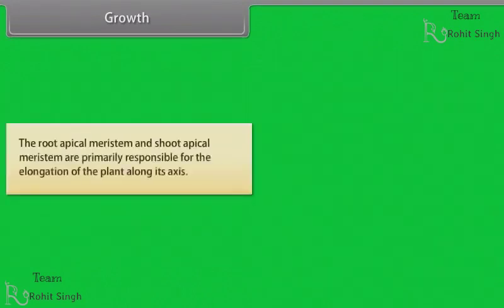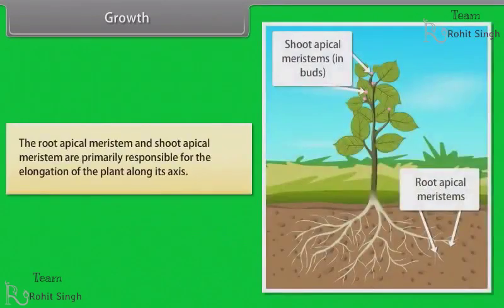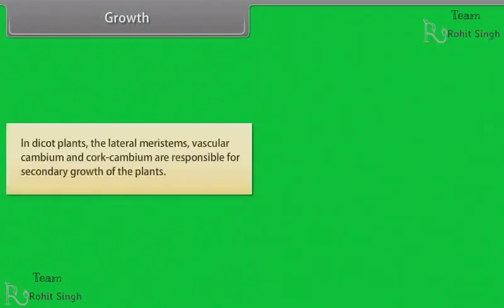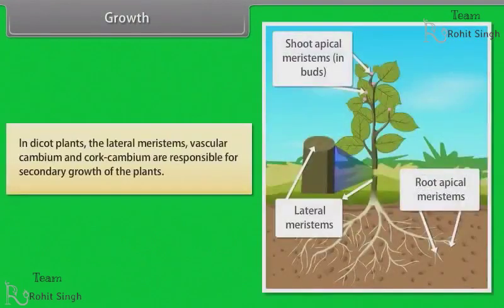The root apical meristem and shoot apical meristem are primarily responsible for the elongation of the plant along its axis. In dicot plants, the lateral meristems, vascular cambium and cork cambium are responsible for secondary growth of the plants.